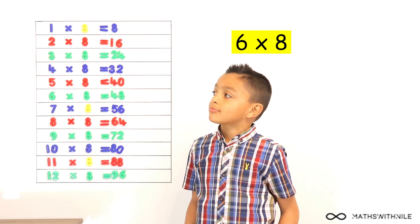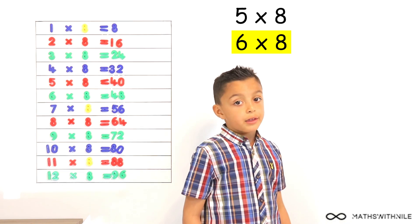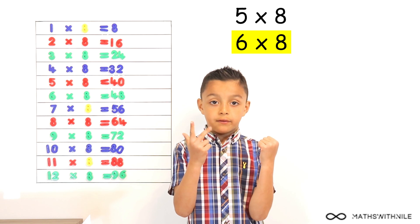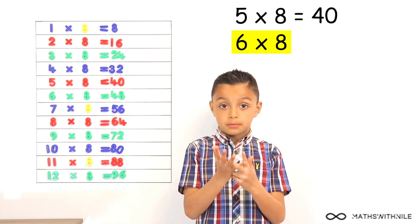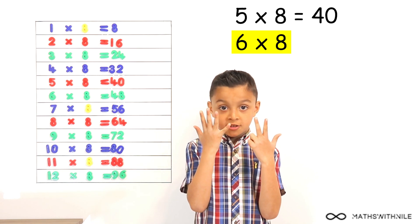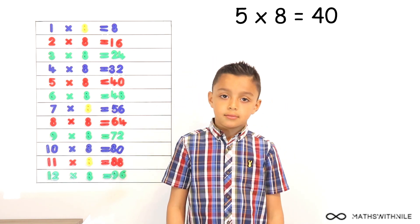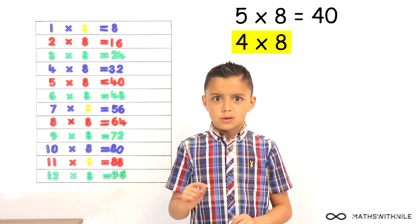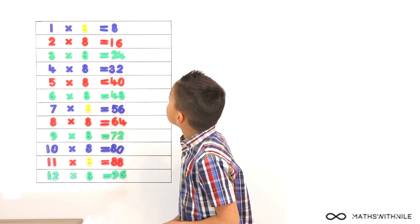So how can you work out 6 times 8? What's close to 6 times 8 that you can work out easily? 5 times 8. How are you going to work out 5 times 8? Commutative — so 5, 10, 15, 20, 25, 30, 35, 40. You've actually worked out 8 times 5, which is the same as 5 times 8. So 5 times 8 is 40 — if I add on 8, the answer is 48. And what would 4 times 8 be? Take away 8. Yes — 40 take away 8 equals 32. Very good, you are correct.